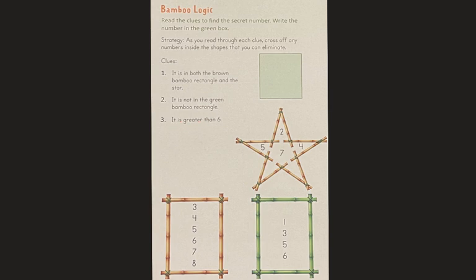Clue number three. It is greater than six. So any number that's lower than six cannot be it. And those clues should have given you enough to figure out the mystery number. Let's read them one more time. It is in both the brown bamboo rectangle and the star. It is not in the green bamboo rectangle. It is greater than six.